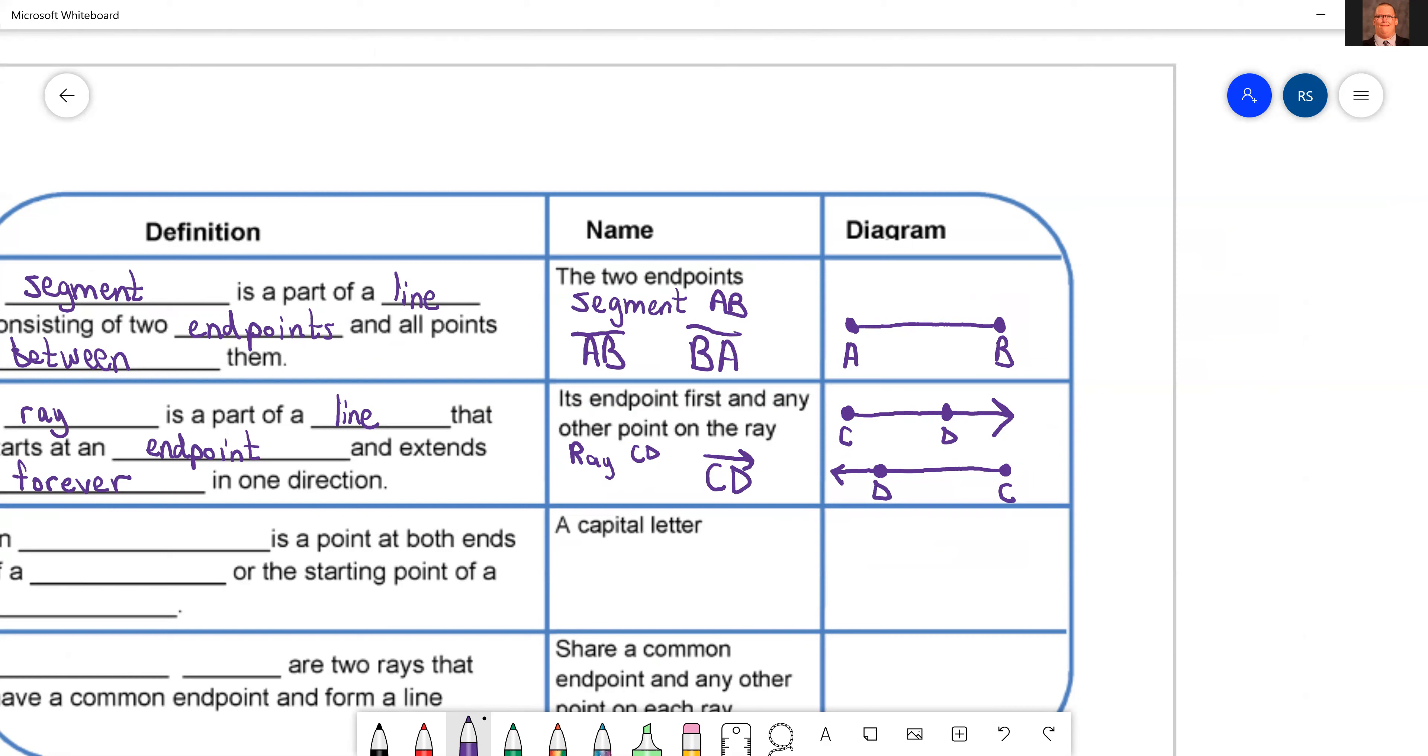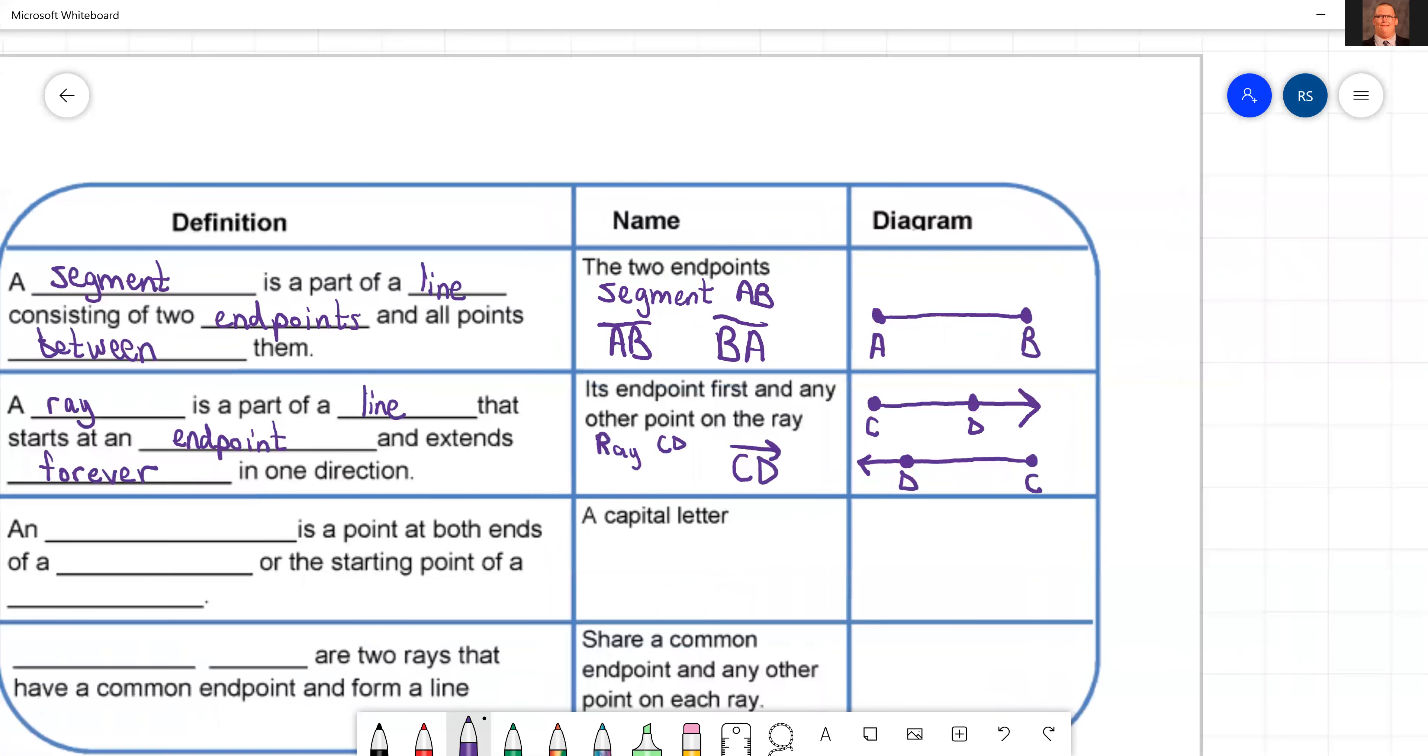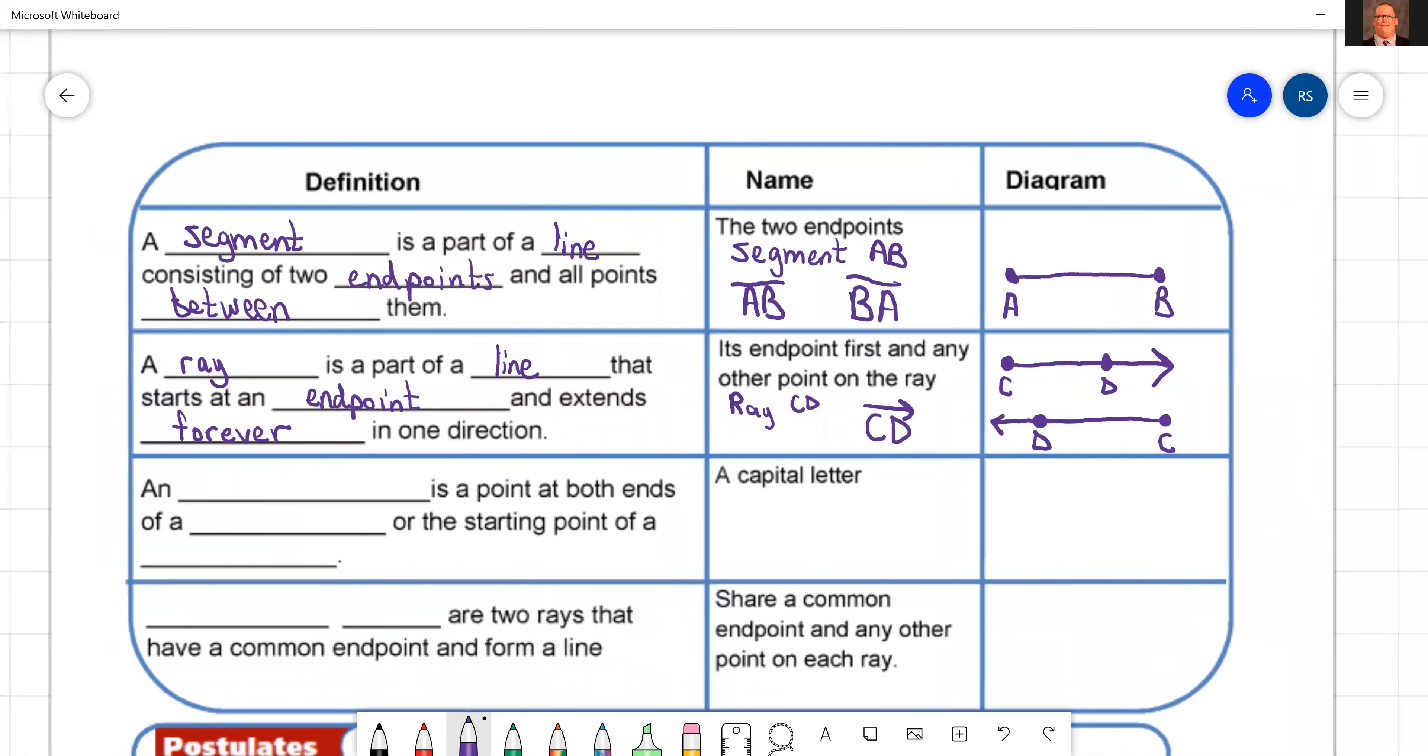We can write it out and say ray CD. Or you can do symbols CD and then draw a line with only one arrow. Now, when you name it, you have to put the endpoint first. Where does it start? Think of it like a race. Start your engines. Where do I start my engines at? On both of these, we start at C. And then we just have to pick a point after wherever we start. So in each case, we went through D.